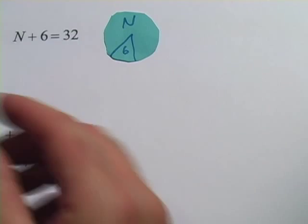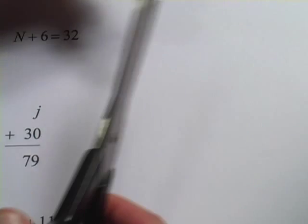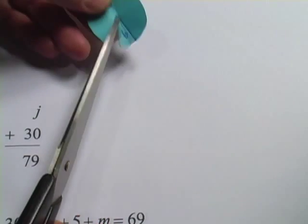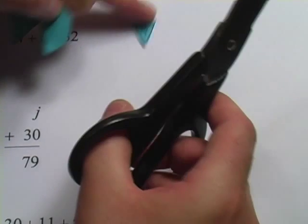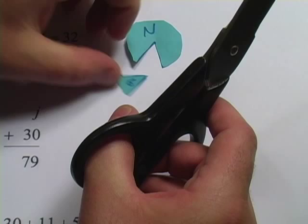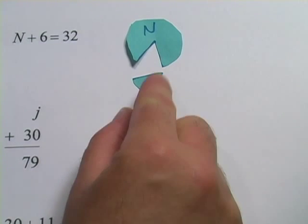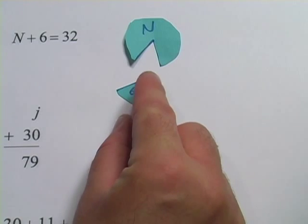So if you were to chop out that 6 and take it away from 32, if we take that 6 away from 32, that would be what N is. So we're taking 6 away from 32.